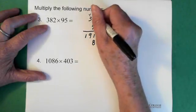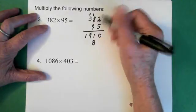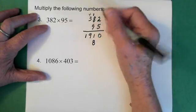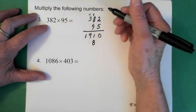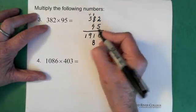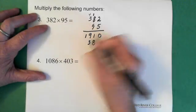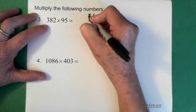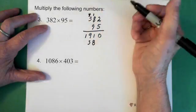So now we take the 9, multiply it by the 8. We get 72. We add the 1 and that's a 73. So the 3 goes down here and the 7 goes above the 3.